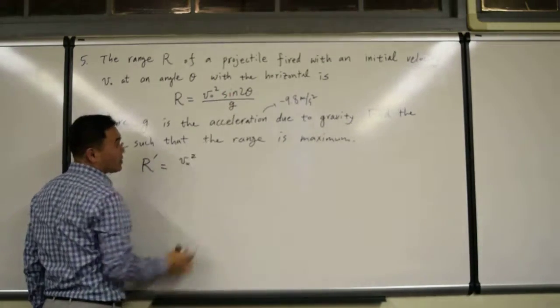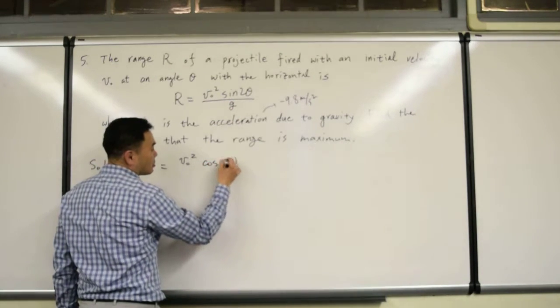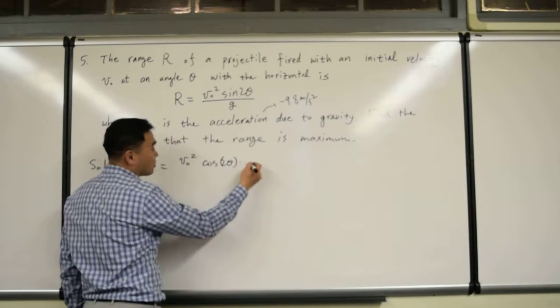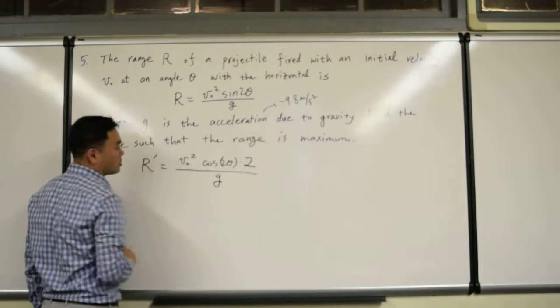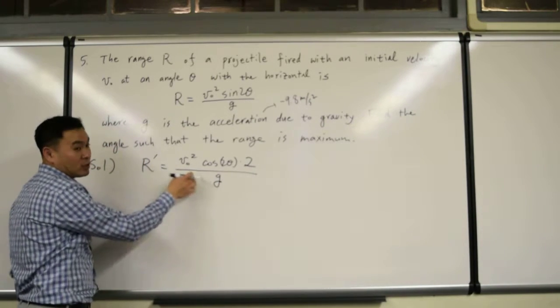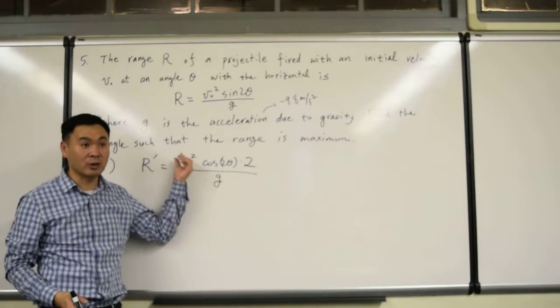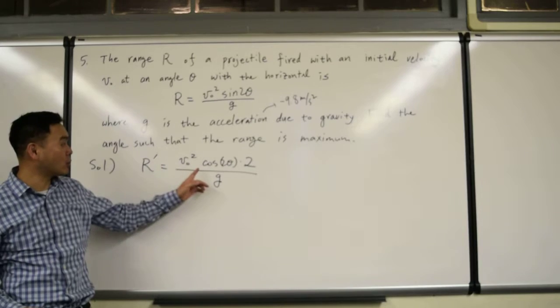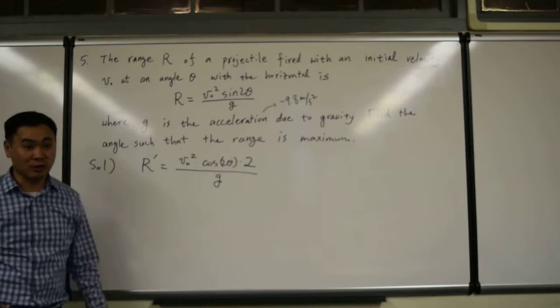If you differentiate sine 2 theta, you have to use the chain rule, right? Sine differentiates to cosine, but since 2 theta is nested in sine, that has to pull down and differentiate it, so it's 2 over g. V-naught squared over g, these are just constants multiplied to this function, so you don't have to do anything to them. The only thing that requires differentiation is just sine 2 theta. And if you differentiate, this is what you get.